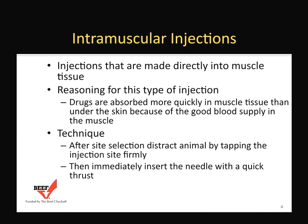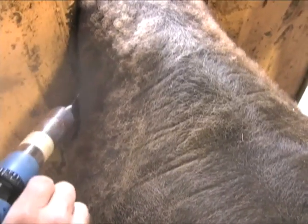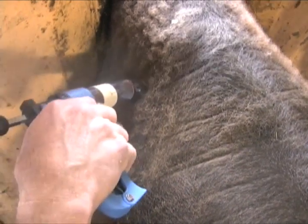Intramuscular injections go straight into the muscle. The reason for this is that muscle tissue has a higher metabolizable rate, so the antibiotic or vaccine is absorbed much more quickly. You can use one of two techniques for giving an IM injection. One is by distracting the animal by tapping on the neck and then giving the injection into the muscular region. The needle should enter the muscle nearly perpendicular to the neck, then dispense the product.